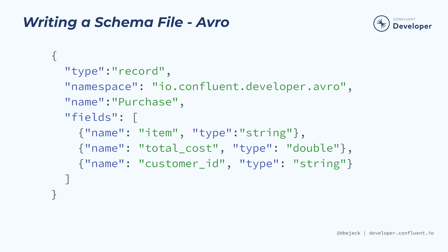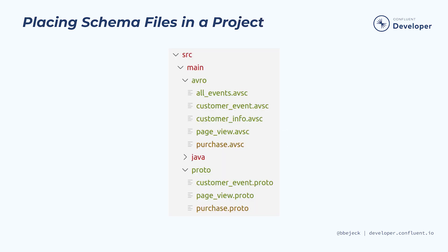For now, we're staying pretty high level, but in the next module, we'll take some time to go into more detail about Avro as well. Now that we've written some schema files, you might be wondering where we ought to put them to make use of them in our application. They need to live somewhere within the Java project. The Avro schema files go in the source/main/avro directory, and protobuf files land in source/main/proto.